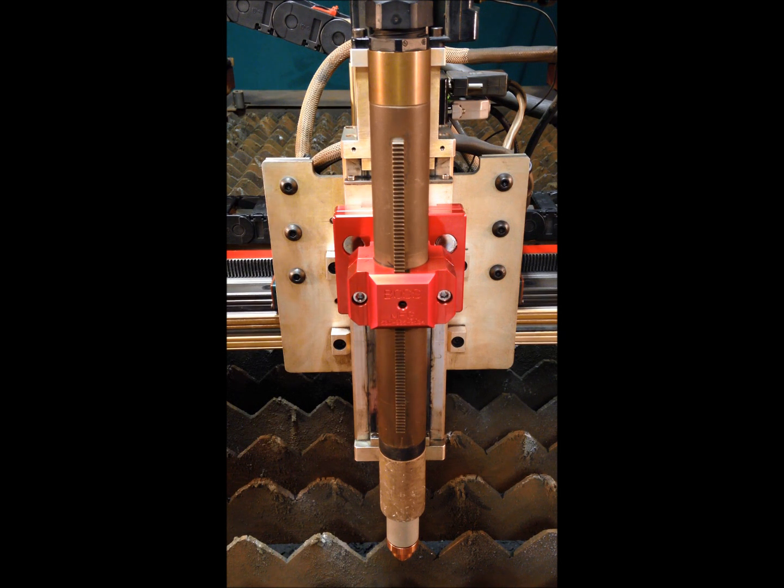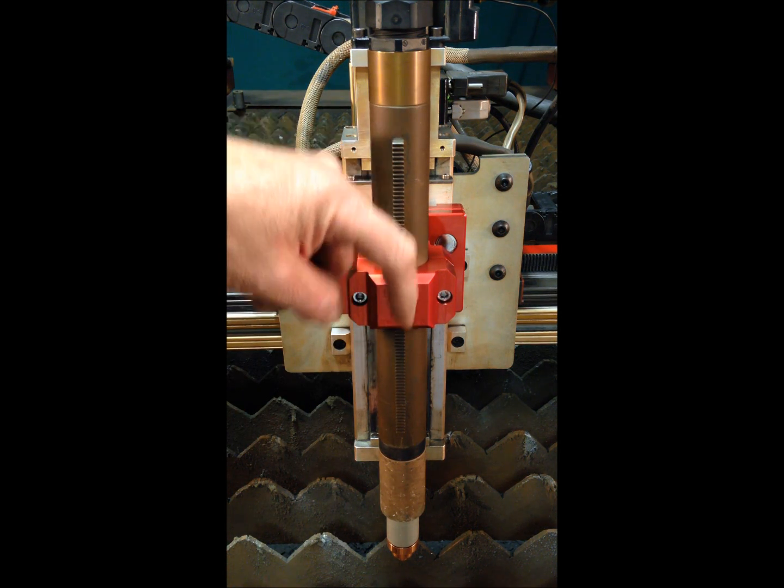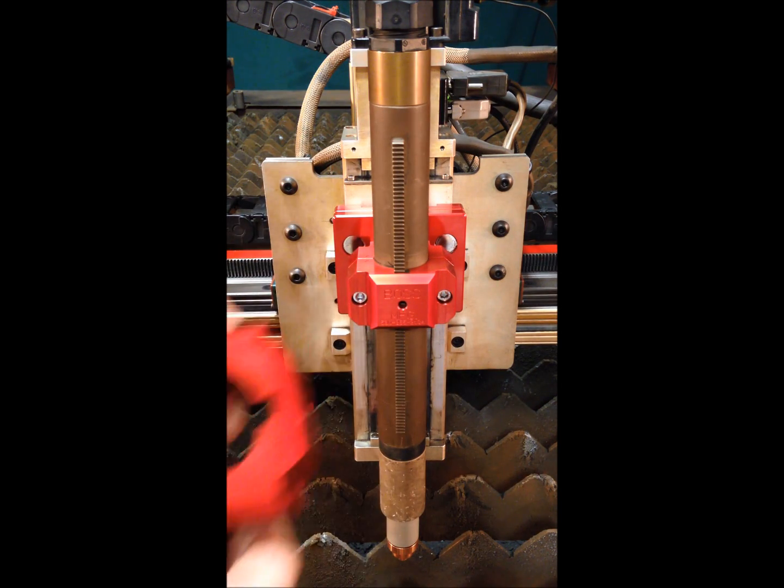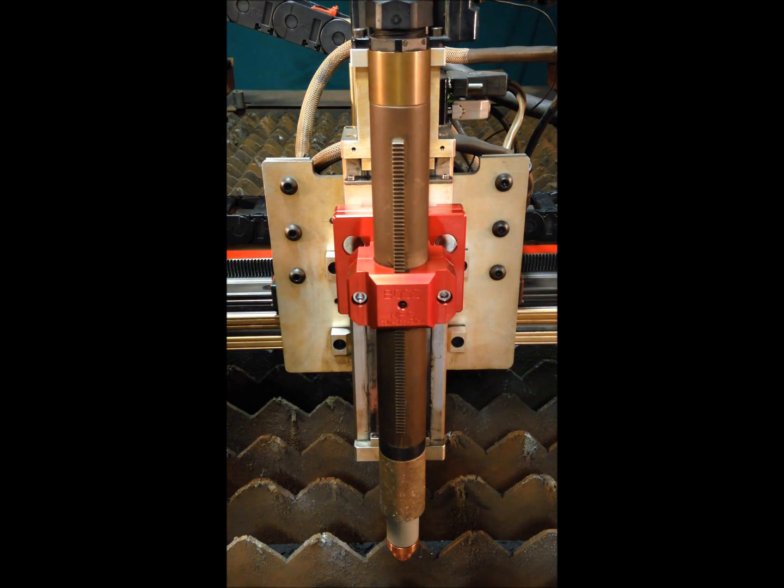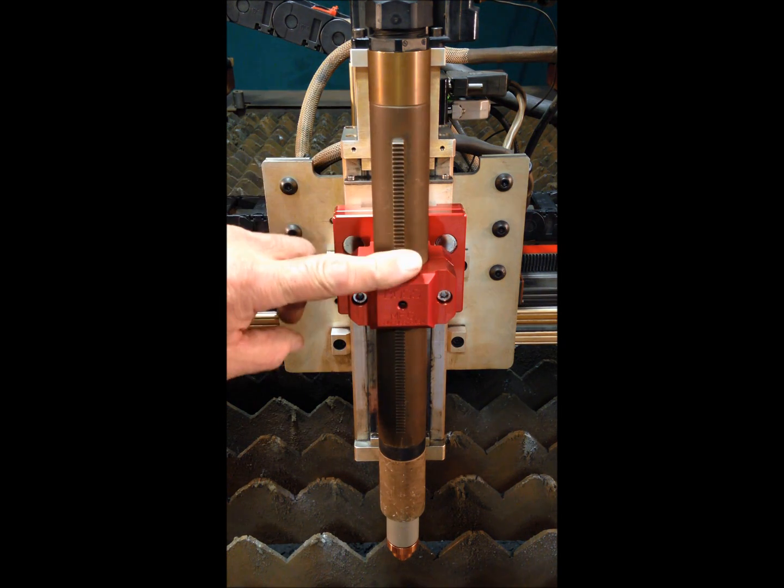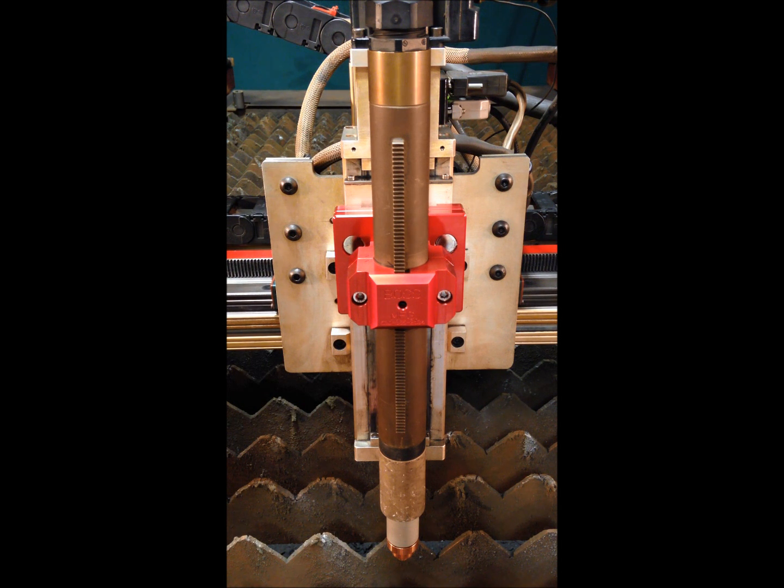Another great feature of the plasma torch holder is that the outside torch holder is broached, as you can see here. This allows the use of both machine gear rack and non-gear rack CNC plasma torches.